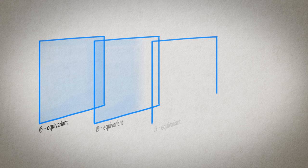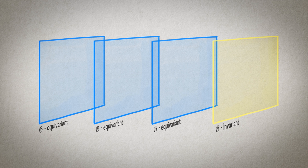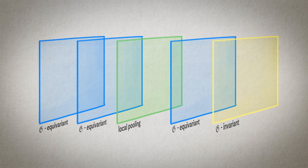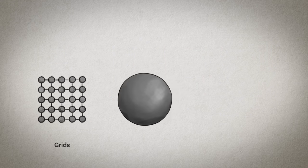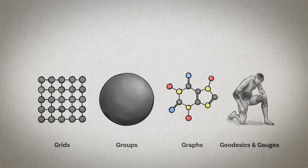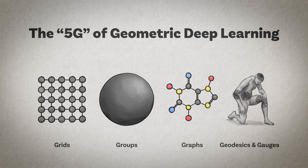These two principles give us a general blueprint of geometric deep learning that we can recognize in the majority of popular deep neural architectures. We can apply a sequence of equivariant layers and then an invariant global pooling layer aggregating everything to a single output. And in some cases, we can also create a hierarchy of domains by some coarsening procedure that takes the form of local pooling in neural network implementations. This is a very general design that can be applied to different types of geometric structures such as grids, homogeneous spaces with global transformation groups, graphs and manifolds where we have global isometry invariance as well as local gauge symmetries. We call these the 5G of geometric deep learning.